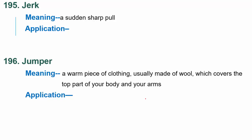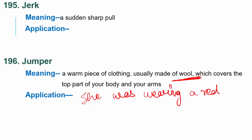Next word is jumper. Jumper is a warm piece of clothing usually made of wool, which covers the top part of your body and your arms. Jumper jo hota hai ek warm piece hota hai jo hum sardiyon mein pahnte hai, wool ka bana hua hota hai, jo humare upar ke shareer ko cover karta hai aur humare hatho ko cover karke rakhta hai. She was wearing a red jumper.